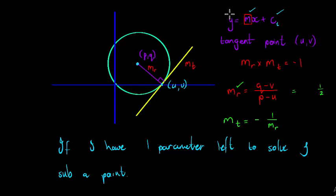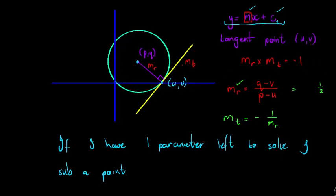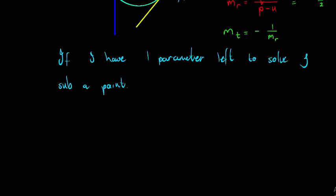Well, we'll substitute the tangent point because the center does not lie on the line. I'm trying to find the equation of the line, I need to use information directly related to the line, and the point (u,v), the tangent point, is on the line.